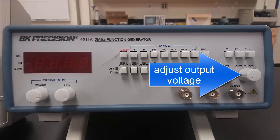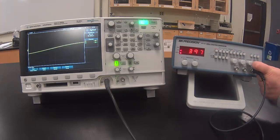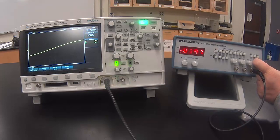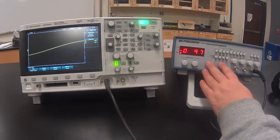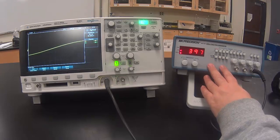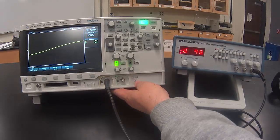You can adjust the output voltage with this knob on the function generator. Once we have set up the frequency and voltage here on the function generator we don't want to change it. Because we want to learn to use the oscilloscope to read that and it wouldn't make sense to change it in the middle of our reading.